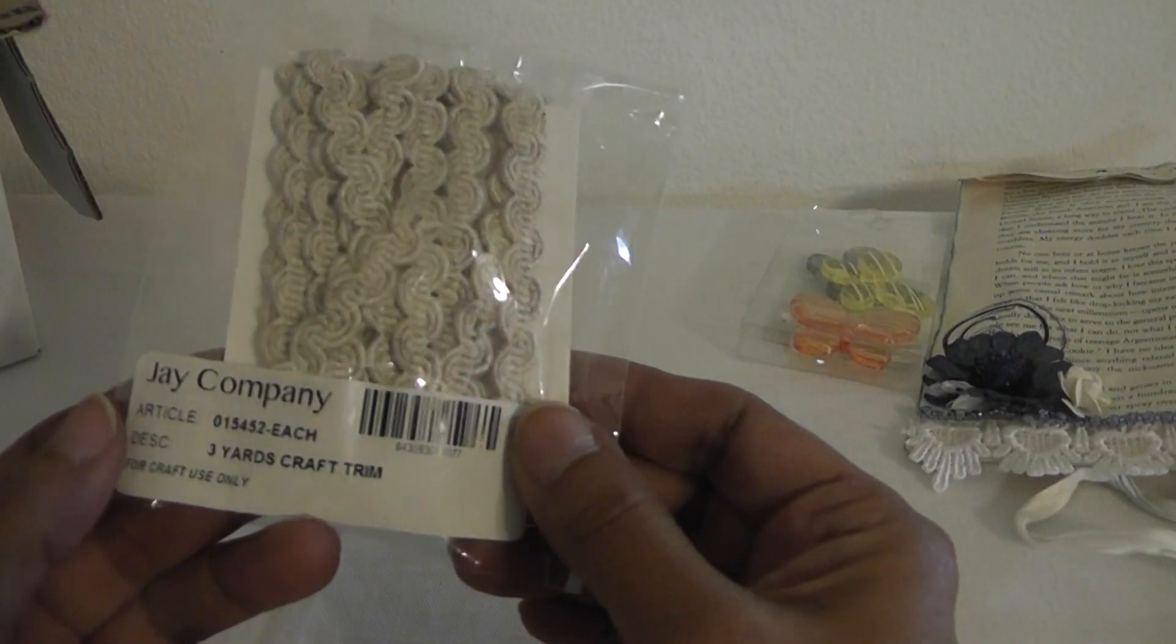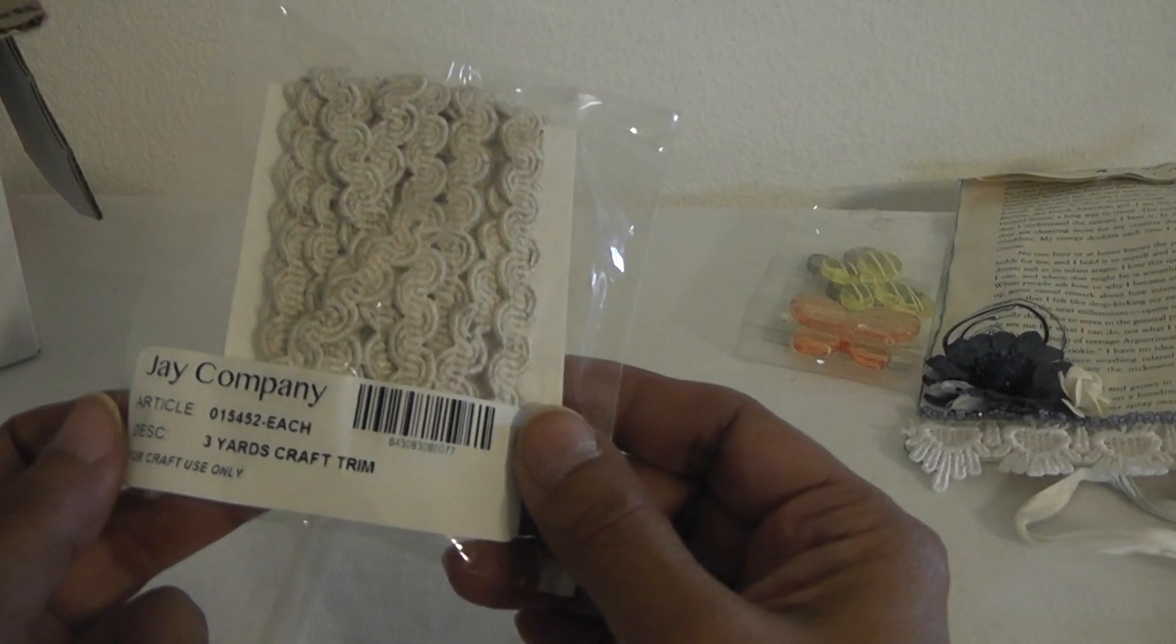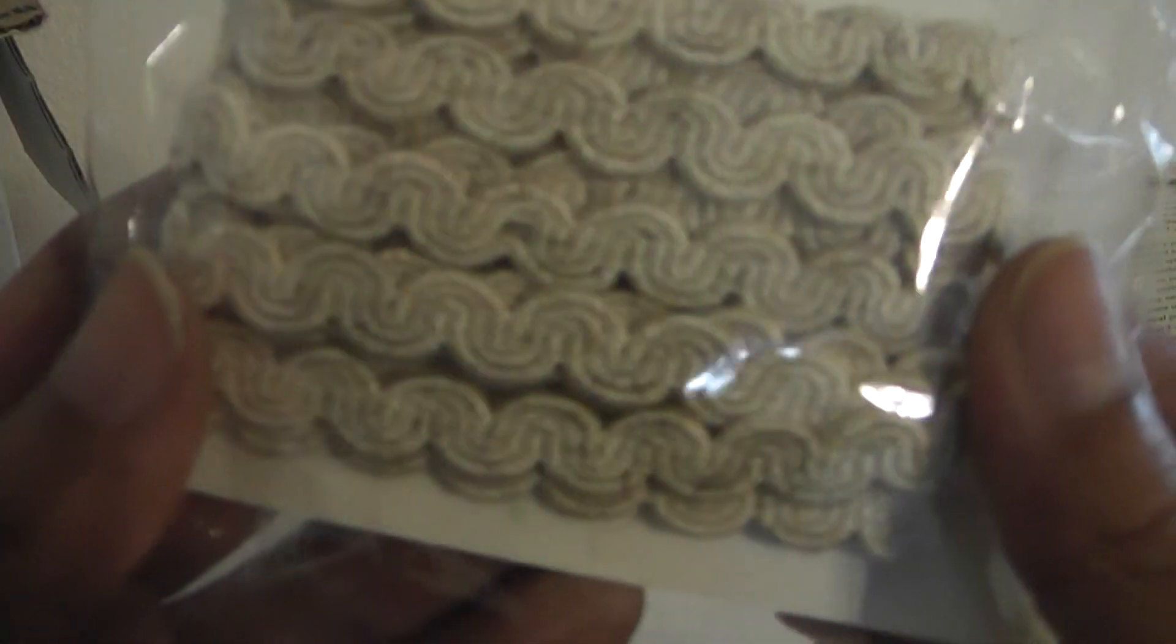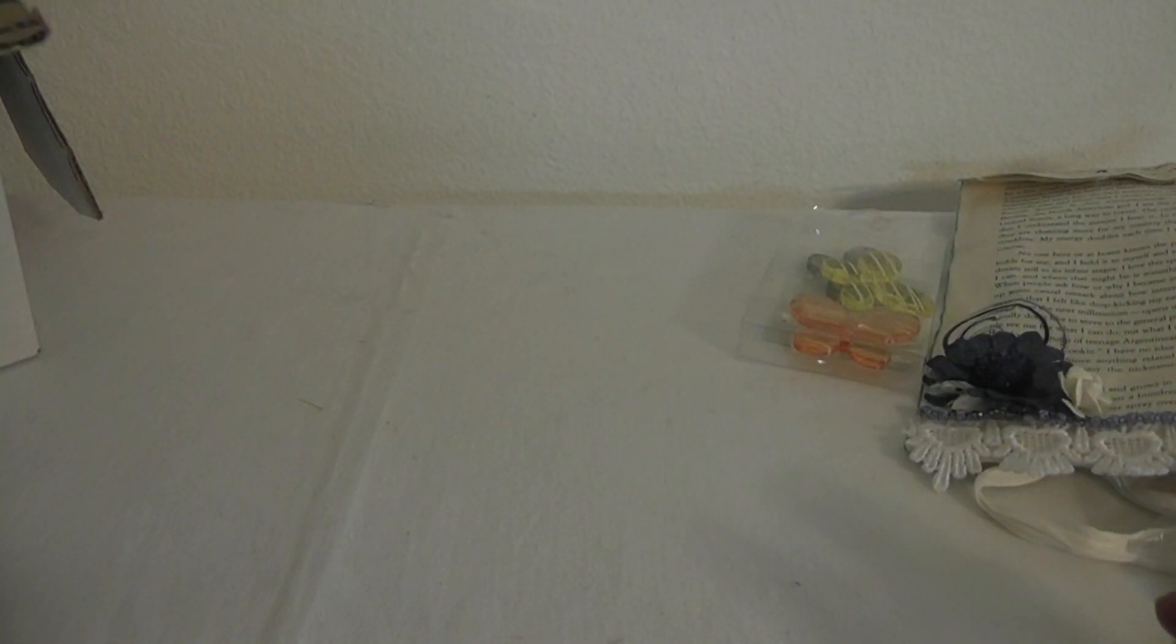And she sent me some more trim. This is from the J Company. Three yards of craft trim. Very pretty. I like that. It kind of looks like canvas.